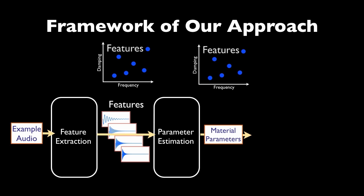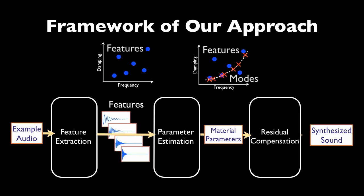Applying the estimated material parameters in modal analysis, we obtain modes for this sounding object, shown as the red crosses. The dotted line here represents the constraints for modes imposed by the material parameters. In the final stage, we perform residual compensation to increase the realism.